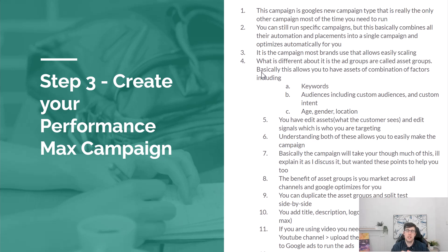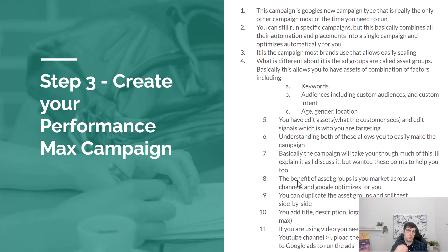You can edit assets at any stage, duplicate an asset group, and edit the signals accordingly. Signals is who you're targeting; assets is what those people see. Google's AI handles the title, description, logo, images — up to 20 — and videos up to 5. You might want multiple asset groups if you're a brand with several collections — for example, 10 collections could mean 10 asset groups with different signals and assets.